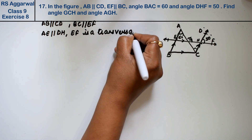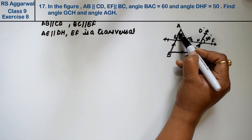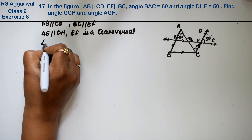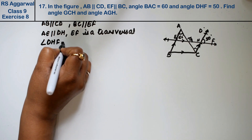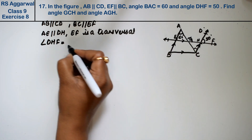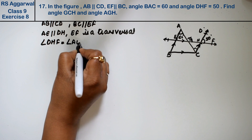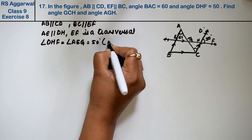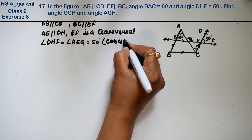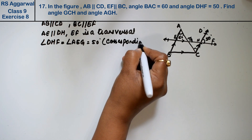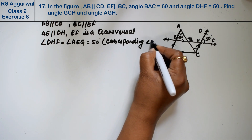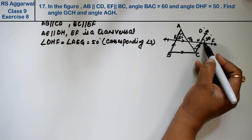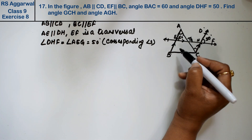So angle DHF equals angle AEG, which is 50 degrees. Why? Because these are corresponding angles — since AE is parallel to DH and EF is the transversal, the corresponding angles are equal.